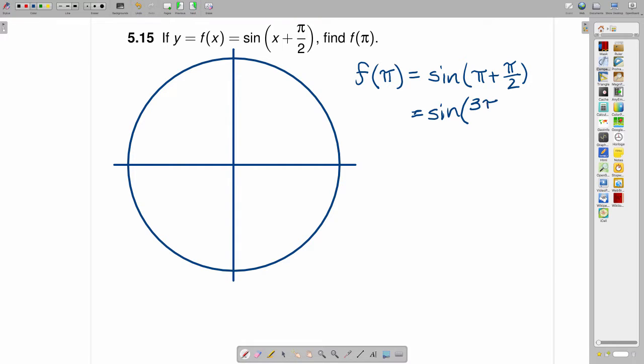And that is the angle that we are interested in the sine of. So at this point, we try to identify on the winding function where 3 pi over 2 is.